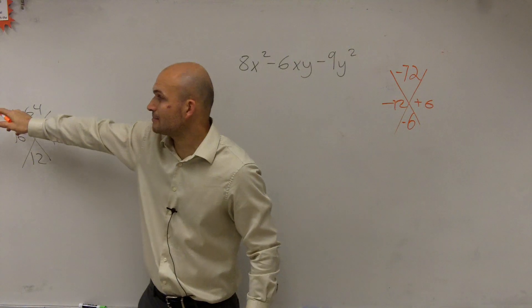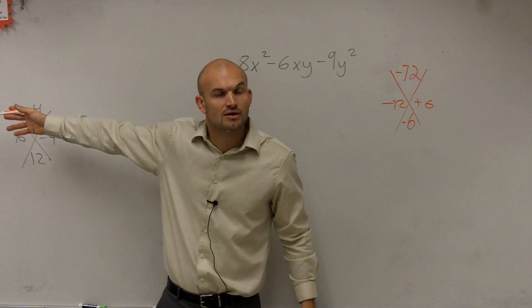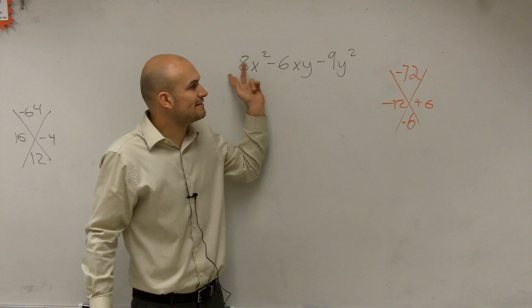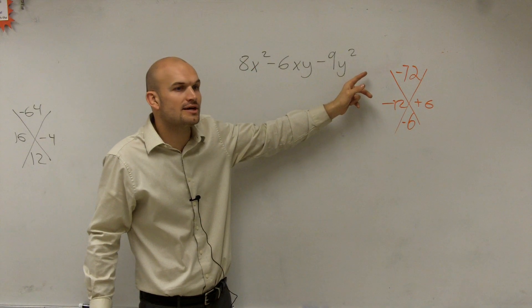Make sure, unlike that problem, see how this, on over here, I just used the negative 64, right, because that was our C. This problem, we have A, so we have to make sure we multiply our A times our C. OK, Adara?